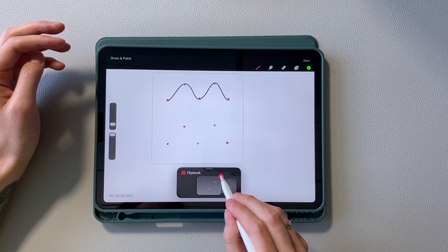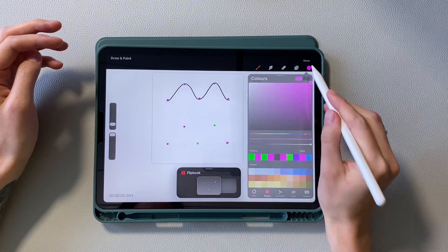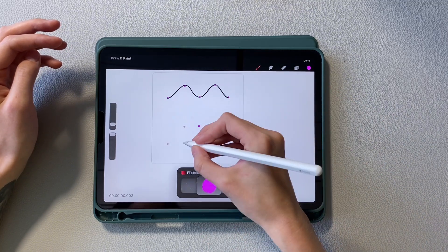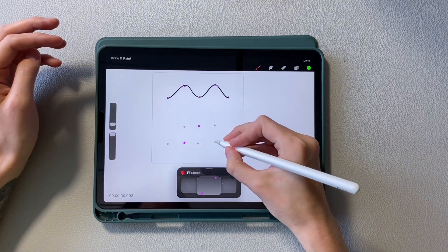Now add an intermediate frame between the first and second. And draw the shift of these points to the middle between the adjacent positions. It looks like the letter W.